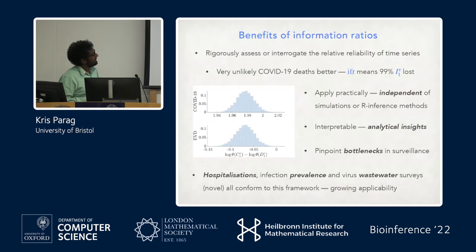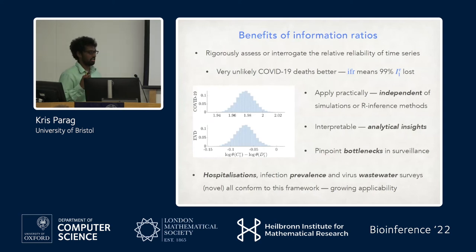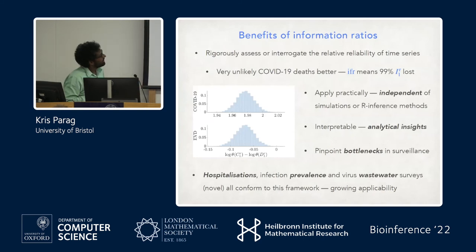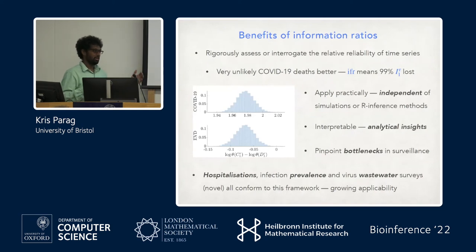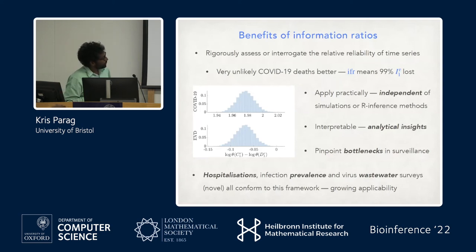From this analysis we generate insight where there is missing insight in the literature on how to compare different time series for this growth rate parameter. It seems very unlikely that death data would be better. The key insight is simple: the infection fatality ratio means that even before considering how good death data might be, you've thrown away 99% of possible infections.